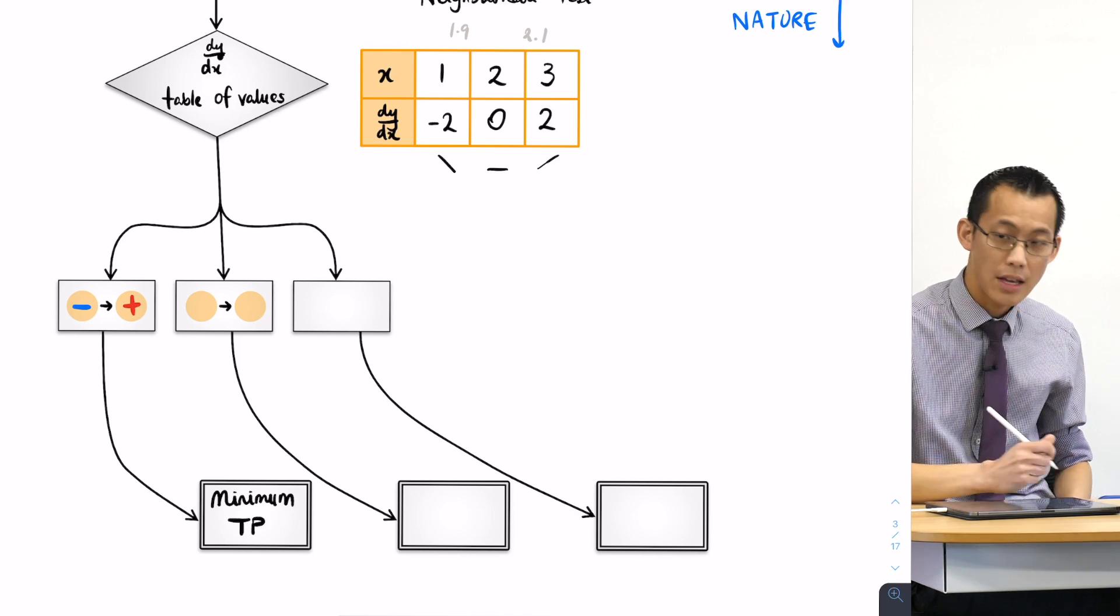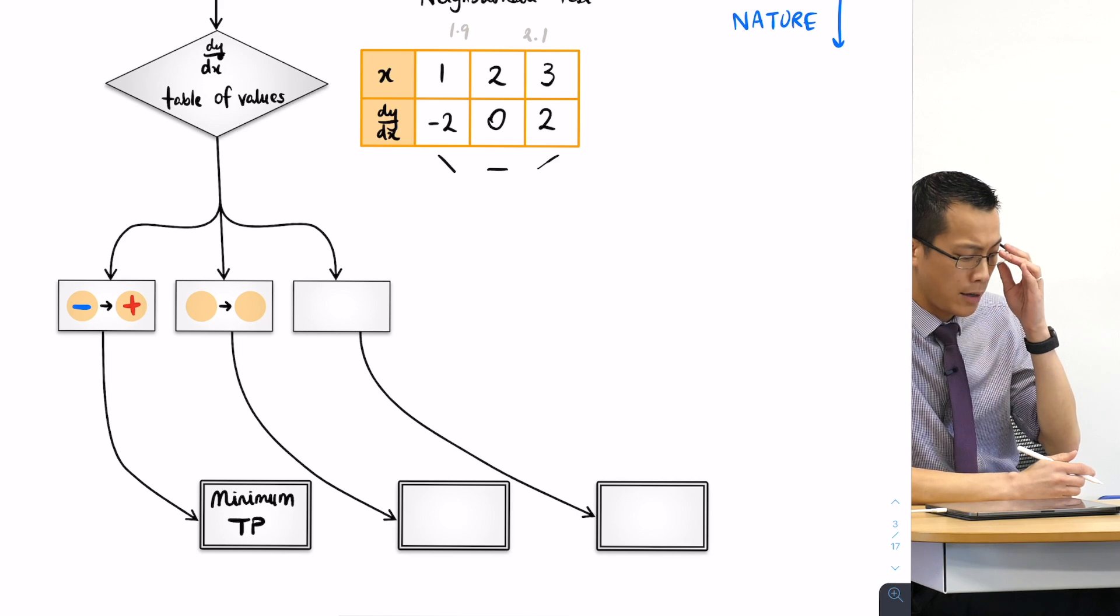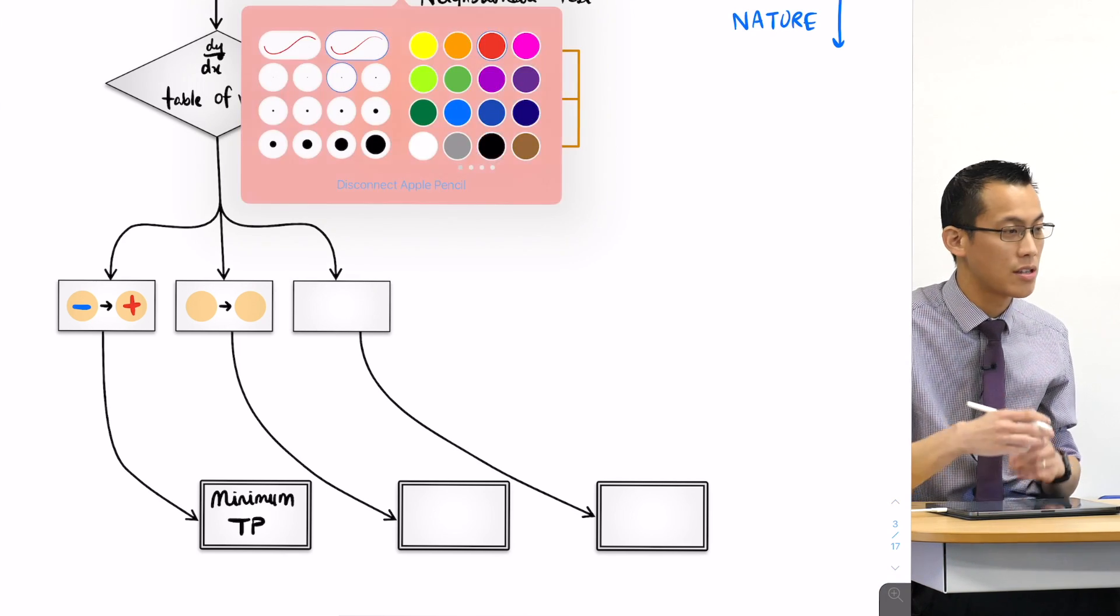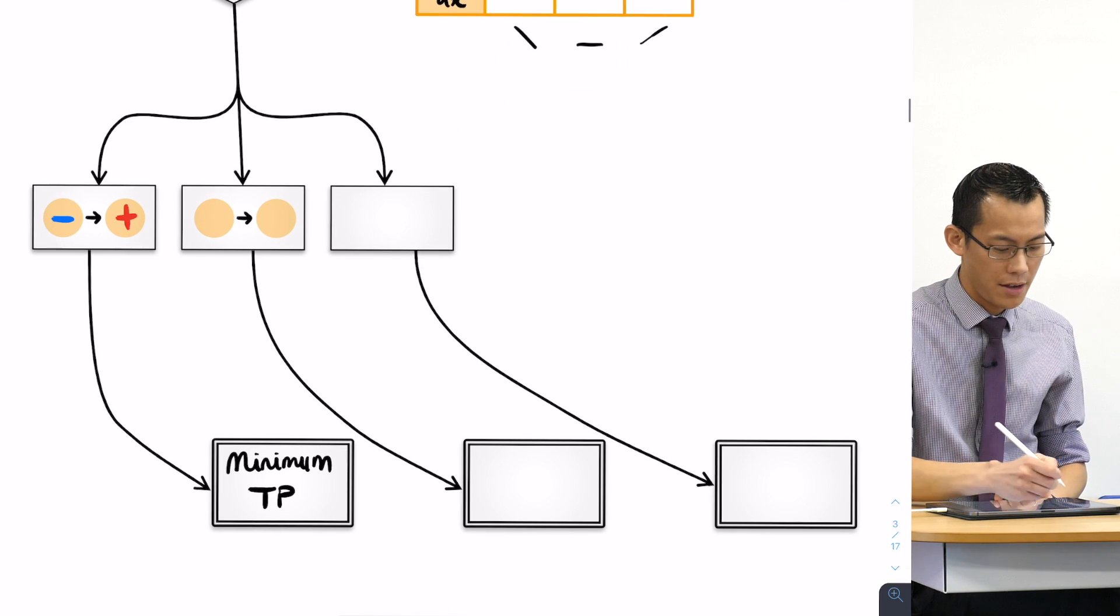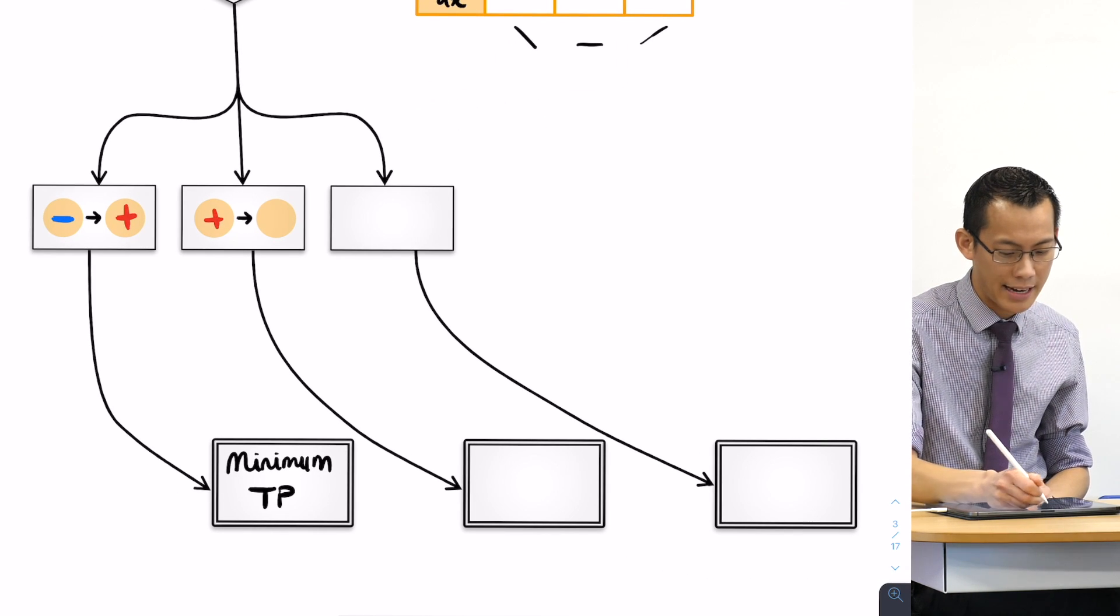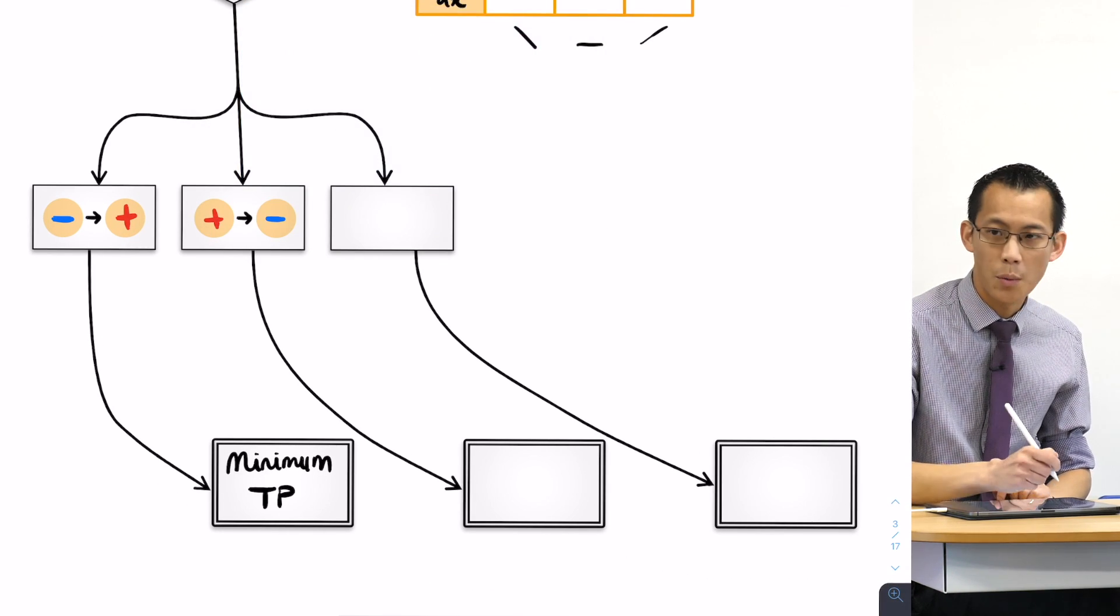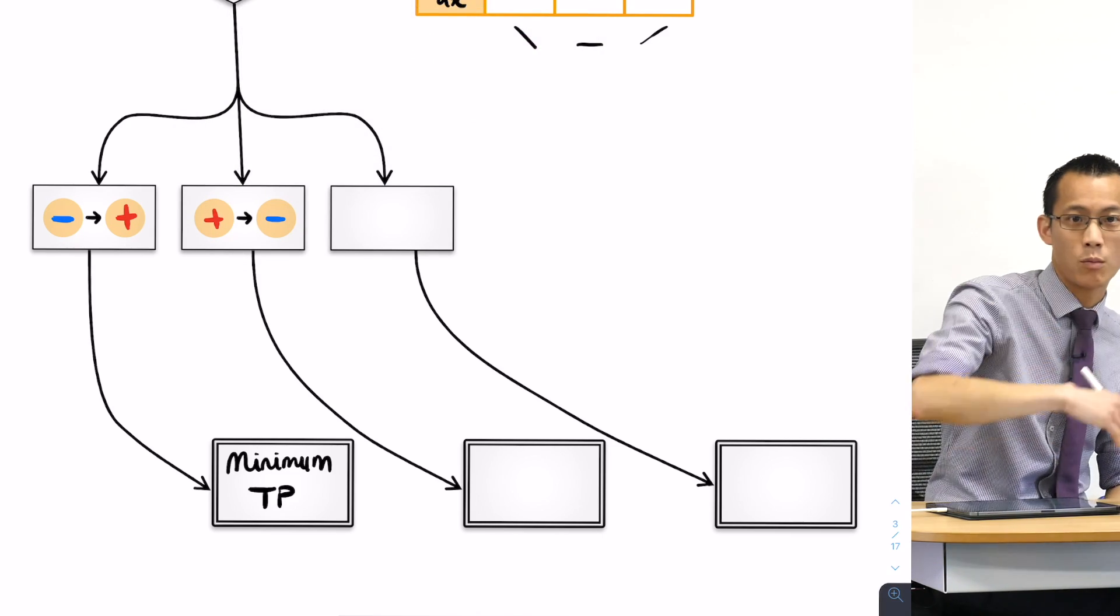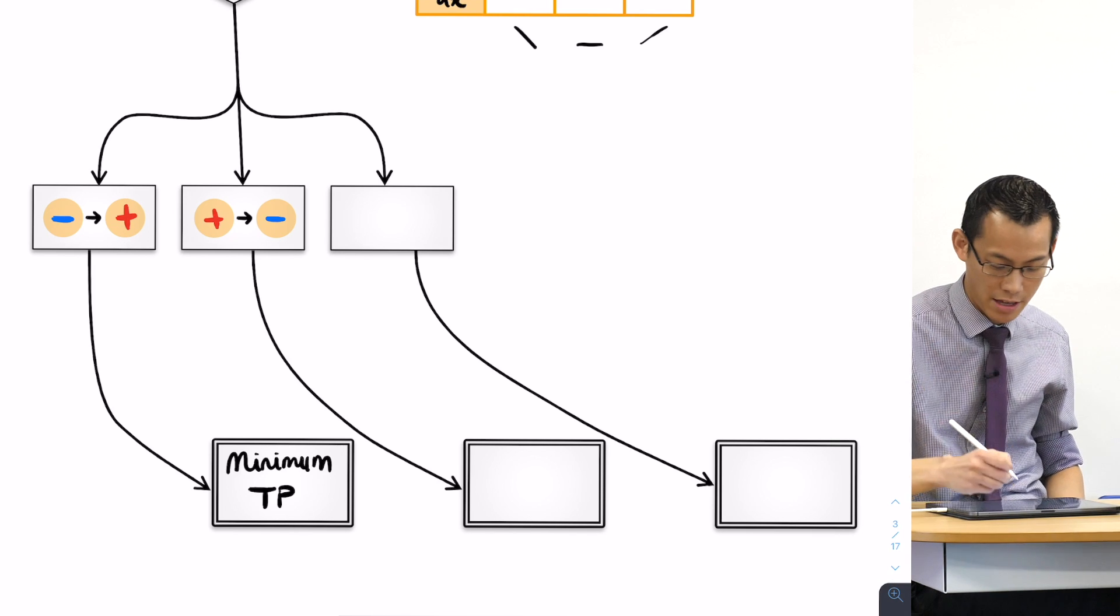But of course, this is not the only thing that might actually happen. We might actually have the change in sign in reverse direction, yeah? So if I went from positive to negative, what would that tell us? It's going up, it's flat, it's going down. What's that? That's a maximum. Thank Eddie. Maximum.